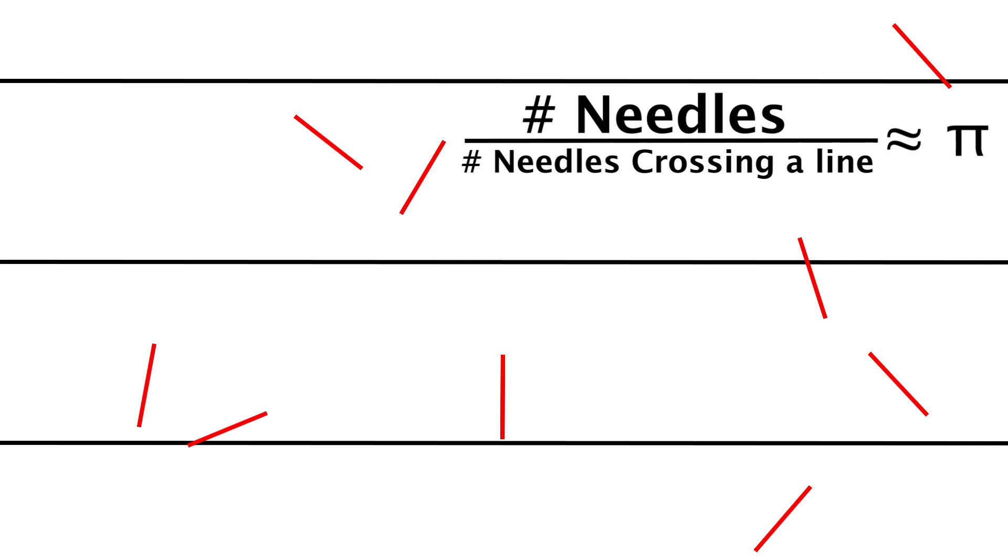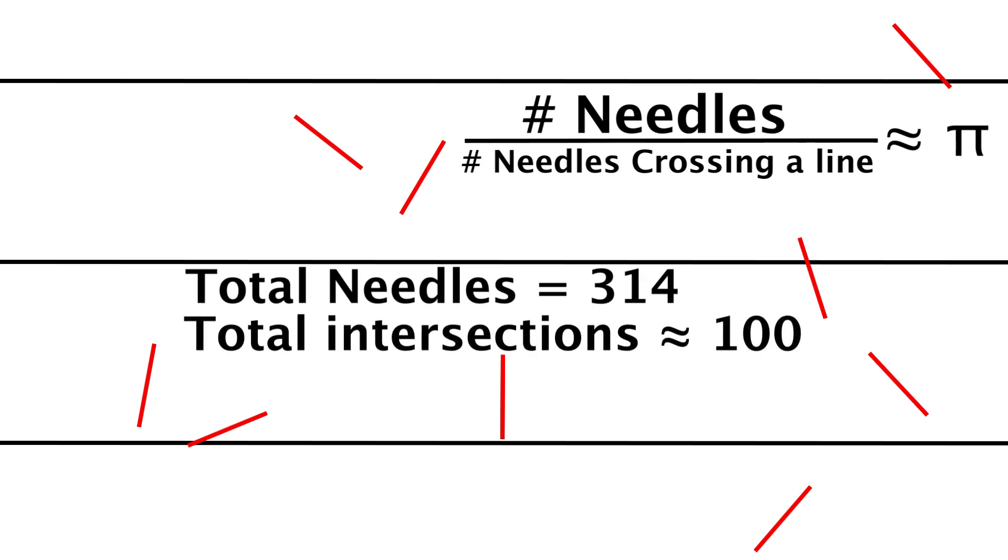And with a little math, you can find that the total number of needles that you dropped, divided by the total number that intersect one of the lines, will be pi. Well approximately. And the more that you drop, the closer to pi you'll get. So if you drop, let's say 314 needles, then likely around 100 would cross one of the lines.